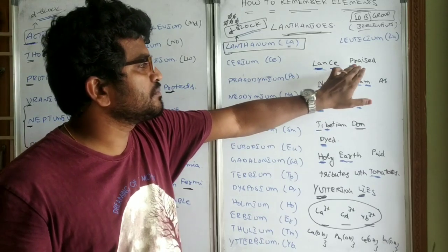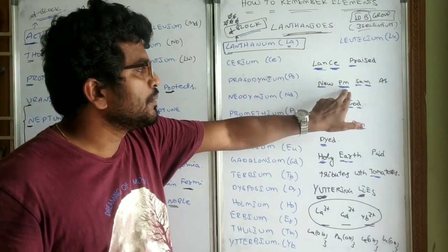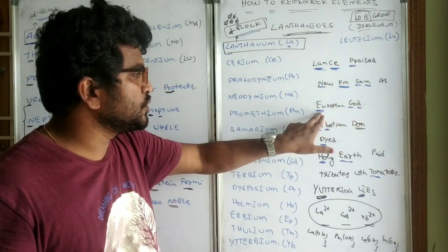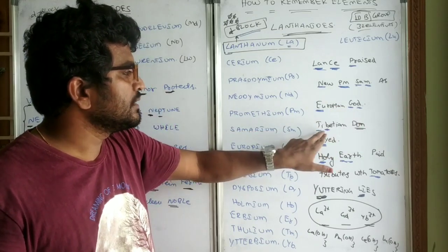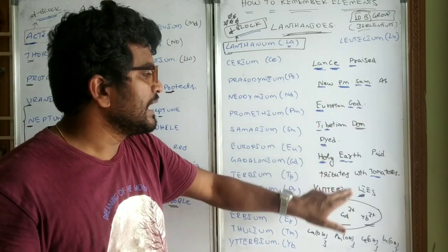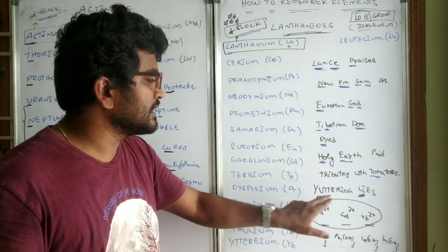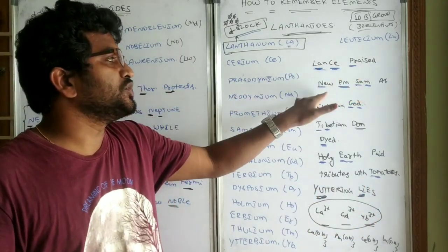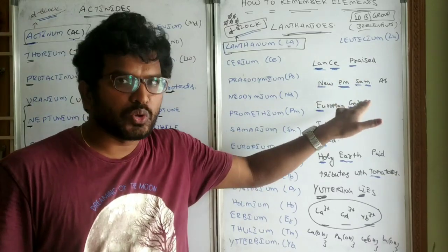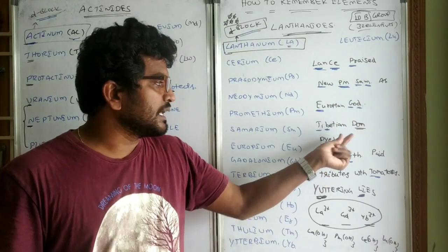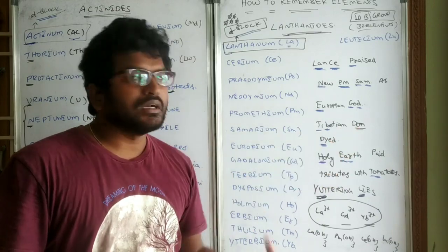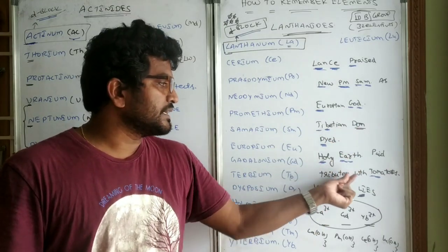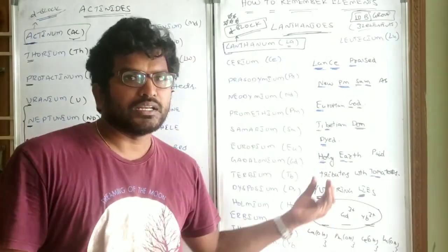Like this you can remember: lanthanum, cerium, praseodymium, neodymium, promethium, samarium, europium, gadolinium, terbium, dysprosium, holmium, erbium, thulium, ytterbium and lutetium. Lance praised new PM Sam as European god. Tibetan don died. Holy earth paid tributes with tomatoes uttering lies.